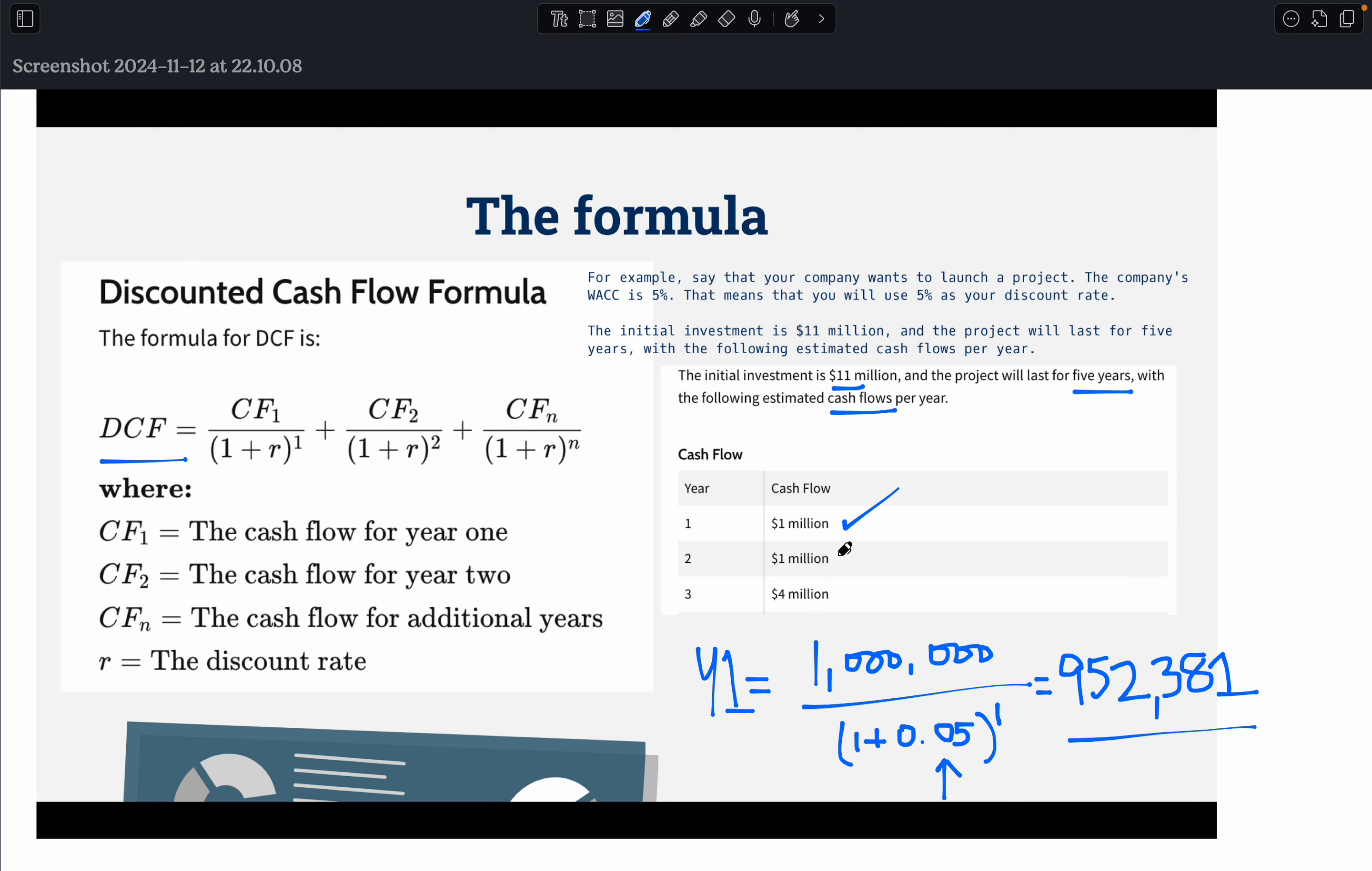And you do the same thing for year two. You do the same thing. The only difference here for year two would be instead of to the power of one, you would put two. And your answer should be 907, something, something. And then you go to year three.